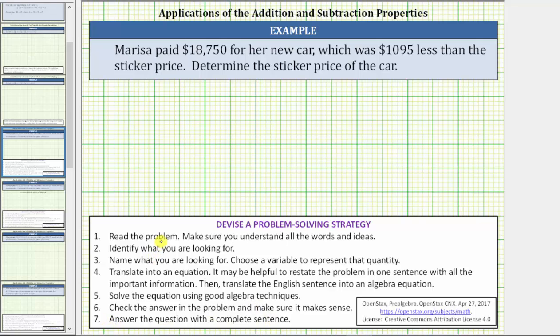Let's go ahead and read the problem. Marissa paid $18,750 for her new car, which was $1,095 less than the sticker price. Determine the sticker price of the car.